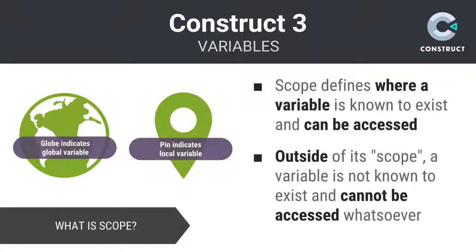Watch out for these two icons that you will see when working with Construct. The globe identifies a global variable that can be accessible project-wide, whereas a location pin signifies a local variable that is not accessible outside of its immediate block-level scope.